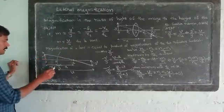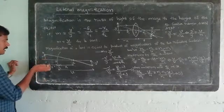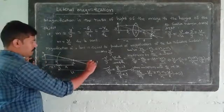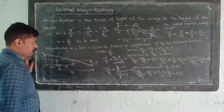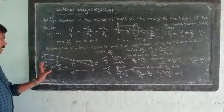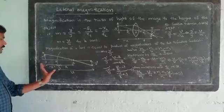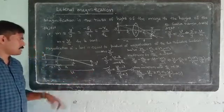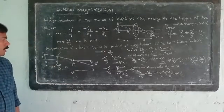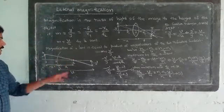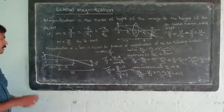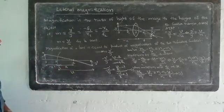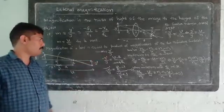We have the object here at distance minus U with height y, and image height minus y-dash. We have the first refracting surface with object-like distance minus U and image-like distance V and radius R. We have the center of curvature C and the radius of curvature R. Magnification M is equal to y-dash by y.